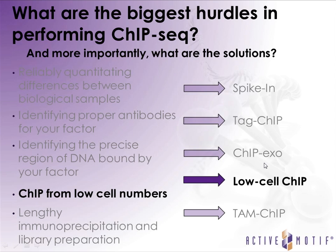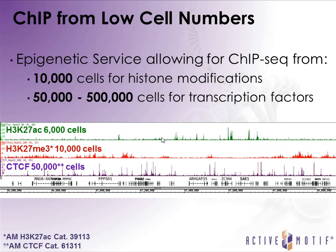The next aspect we've tackled at Active Motif is reducing the amount of cells required for a ChIP experiment, specifically to complement our epigenetic services. We've been able to reduce the amount of cells required down to 10,000 cells for histone modifications and 50,000 to 500,000 cells depending on the transcription factor and its abundance. Here I show data for H3K27 acetylation at 6,000 cells, K27 trimethylation at 10,000 cells, and CTCF at 50,000 cells.